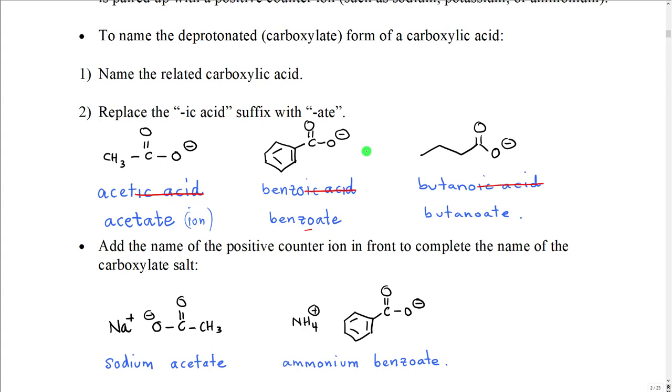This becomes important when the carboxylic acid has an 'o' in its name. In that case, you keep the 'o'. So for example, here's benzoic acid—if we deprotonate it, we take off the '-ic acid' and we add '-ate', but we keep the 'o'. So this is called benzoate, not benzate. Similarly, butanoic acid when deprotonated forms butanoate, not butanate.